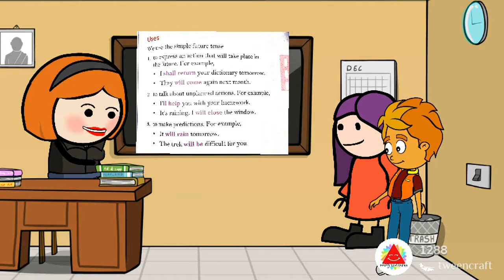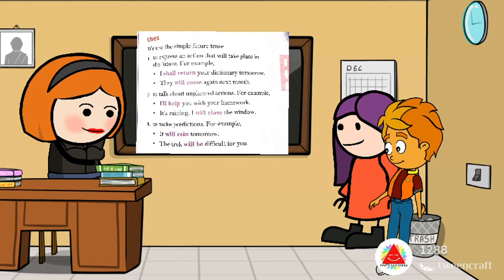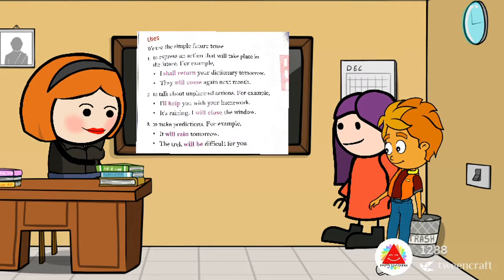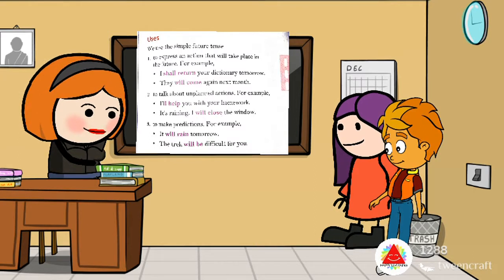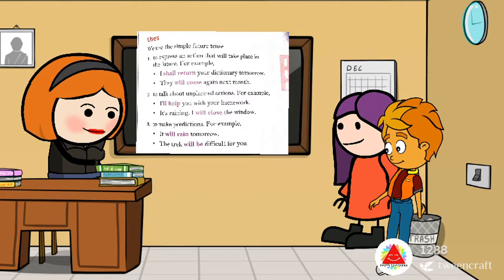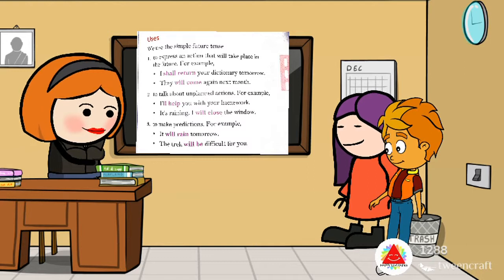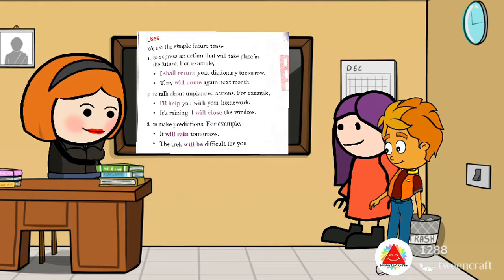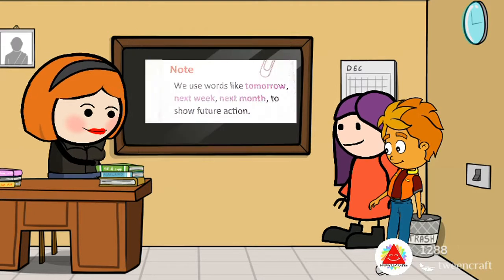We also use simple future tense to talk about unplanned actions. For example, I will help you with your homework. It's raining, I will close the window. We use simple future tense to make predictions. For example, it will rain tomorrow. The track will be difficult for you.